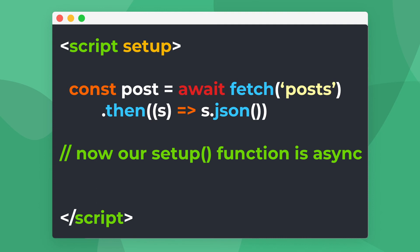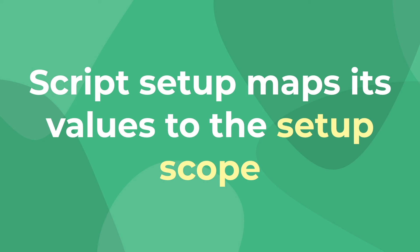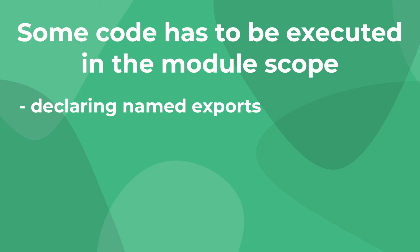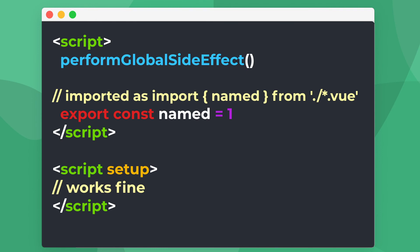It's that simple. The final concept I want to bring up is the fact that script setup can be used in addition to a normal script. Script setup creates its own script scope for its top-level bindings, but in certain cases there might be code that has to be executed inside the module scope. The examples given in the RFC are declaring named exports and creating global side effects that only execute once. We can add this functionality by adding a normal script block right alongside the script setup like this.